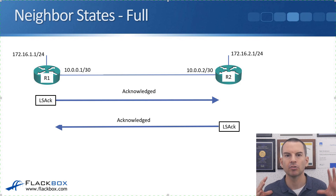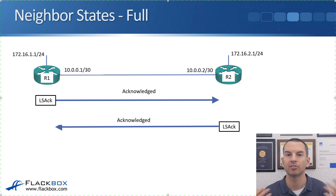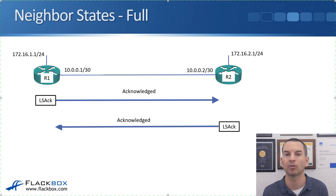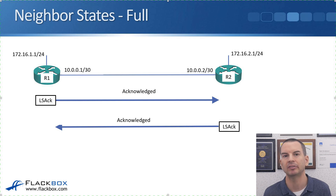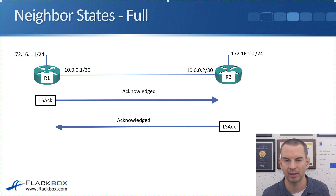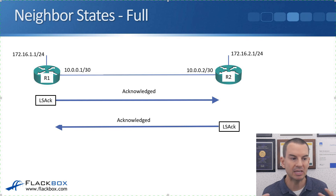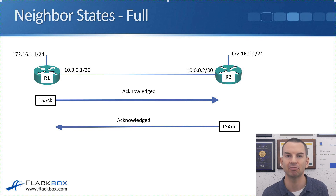At that stage, the routers are in the full state — they have a complete adjacency and have exchanged all routing information with each other. That is how adjacencies are formed on a point-to-point link. There is a difference on multi-access segments such as Ethernet, which use DRs and BDRs — designated routers — and that will be explained in the next lecture.